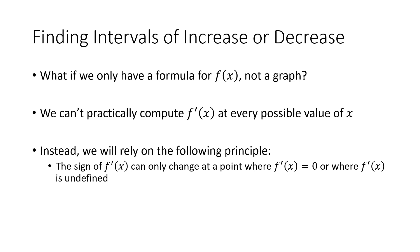The sign of f prime of x — whether f prime is positive or negative — can only change when the derivative is equal to 0 or when the derivative is undefined, because it has to get from a positive slope to a negative slope somehow. Either the function changes gradually: positive slope, then the tangent line levels out to a slope of 0, and then the slope becomes negative — so it crosses over 0. Or the function just doesn't have a derivative at some point, and then the derivative switches sign.